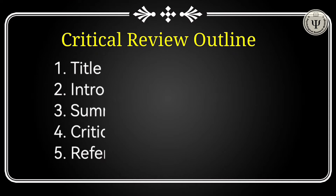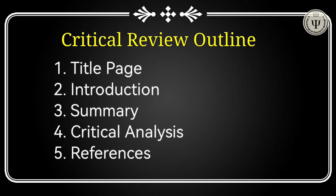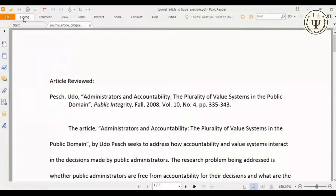An assignment of critical review is outlined by five main headings: the first one is title, second introduction, third summary, fourth critical analysis, and fifth references. Now I will explain these steps with an example. Let's move to the computer screen.